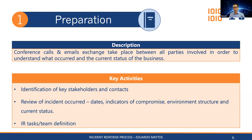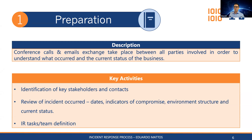We do a quick review of the incident — people tell us dates, indicators of compromise (IOCs), the environment structure, and the current status of the business. For a ransomware attack: are you still operational, what's down, what's up, what are your crown jewels — the most important things to bring back up first. Once this whole picture is defined, we define the IR tasks our team will be doing.